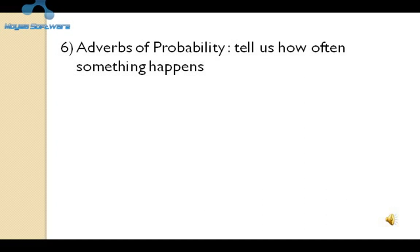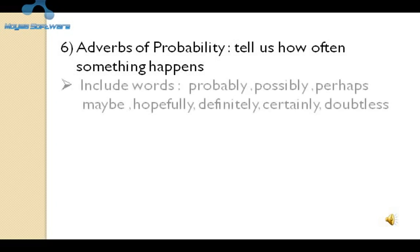Adverbs of probability is another type of adverb. Adverbs of probability tell us about the likelihood of something happening. It includes words like probably, possibly, perhaps, maybe, hopefully, definitely, certainly, doubtless — ऐसे अलग-अलग शब्दों का प्रयोग होता है।